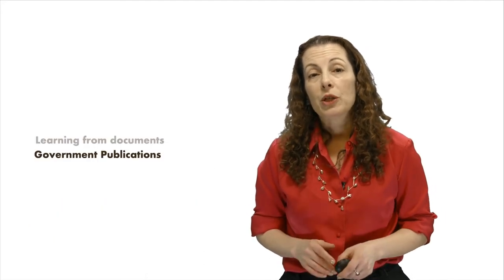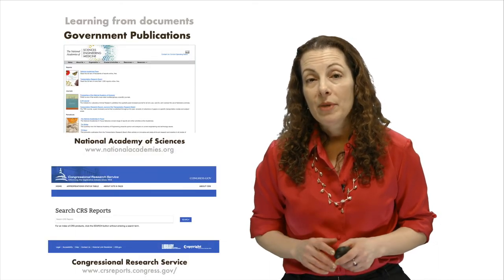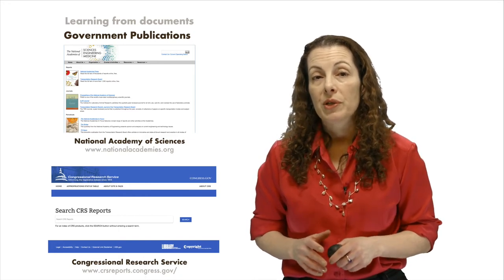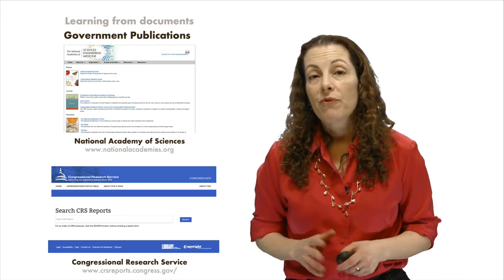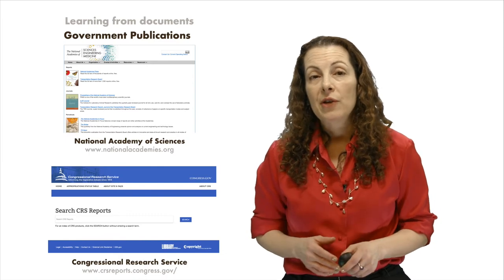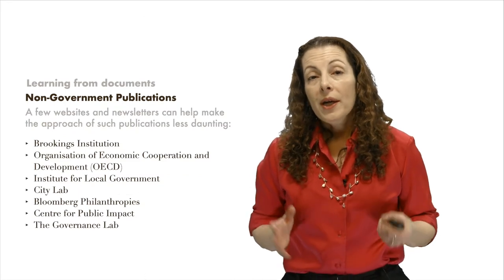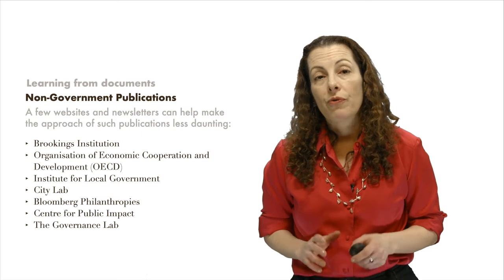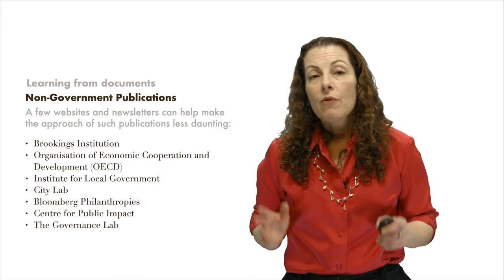Governments also publish literature that can provide expert analysis in a solution space. The National Academies, for example, and the Congressional Research Service publish reports that collect relevant sources of research and summarize policy solutions. The Congressional Research Service reports on federal child welfare policy, for example. That's a 40-page explainer about current statutes, agency programs, and their funding. Organizations, including government agencies, think tanks, interest groups, and NGOs also frequently publish studies and reports detailing successful interventions.